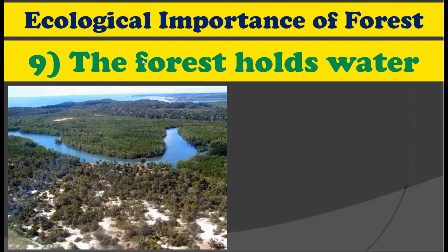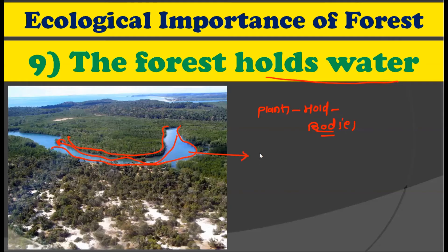The next ecological importance of forest is that forest holds the water. In many forests, you have seen that rivers are running through the forest. The particular structure of this forest maintains the water inside the forest. The forest acts as a boundary for the water and holds it to a singular path. This is how forests are also helpful in holding water as well as giving direction to the water.